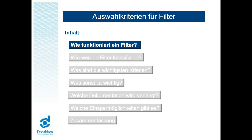Wir werden uns damit beschäftigen, wie man geeignete Filter auswählt. In einem ersten Schritt erklären wir Ihnen die grundlegenden Wirkprinzipien von Filtern, die viele von Ihnen in Ihren Produktionsanwendungen und Prozessen einsetzen. Danach werden wir auf die Selektionskriterien eingehen. Hierbei kommt auch die notwendige Dokumentation zur Sprache, die sich auf Filterleistungen, Kontaktkompatibilität bei Lebensmitteln und andere Anforderungen beziehen. Schließlich werden wir ansprechen, wie die verschiedenen Aufbauarten der Filter die Gesamtkosten — im Englischen auch als Cost of Ownership bezeichnet — ihre Produktion beeinflussen.